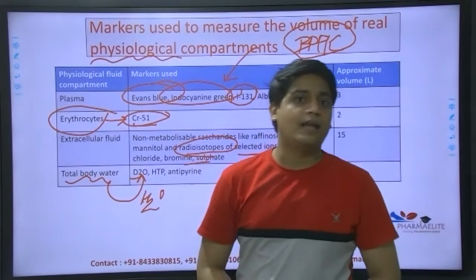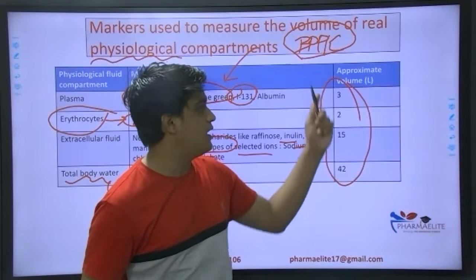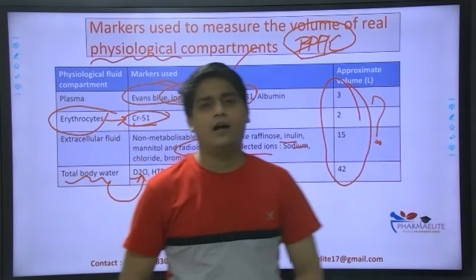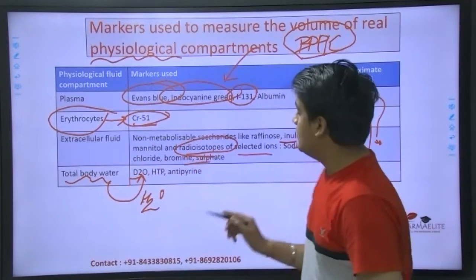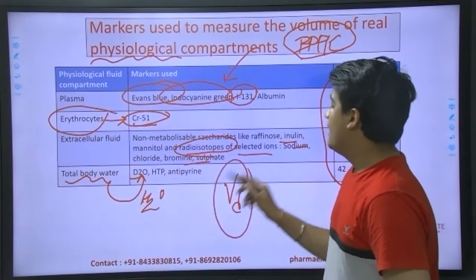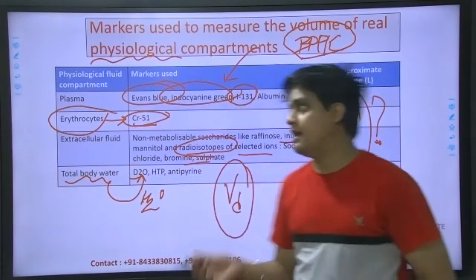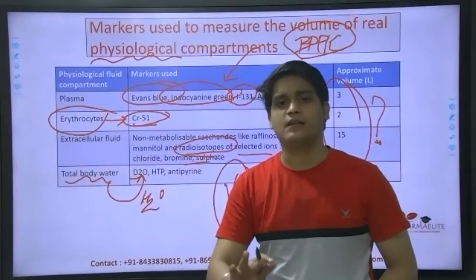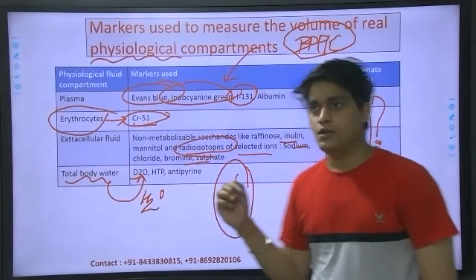What we are supposed to remember from this table - at minimum, know the markers, and it would be great if you can remember the volumes as well. Why? This is all about apparent volume of distribution. The apparent volume of distribution - what is it, where does it come from, how is it related - more on that in upcoming videos. This is important.